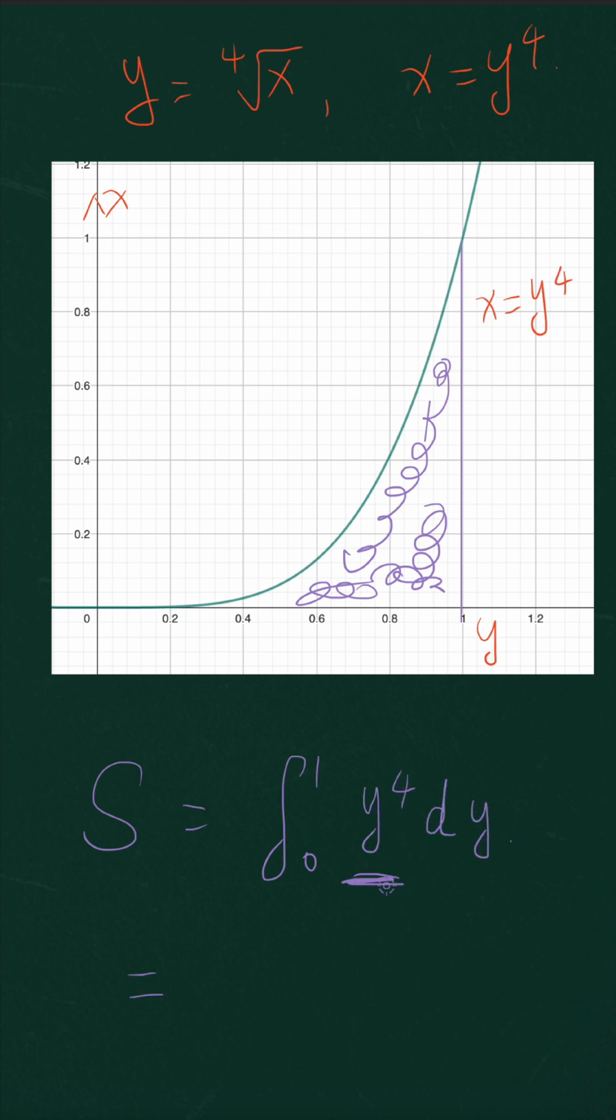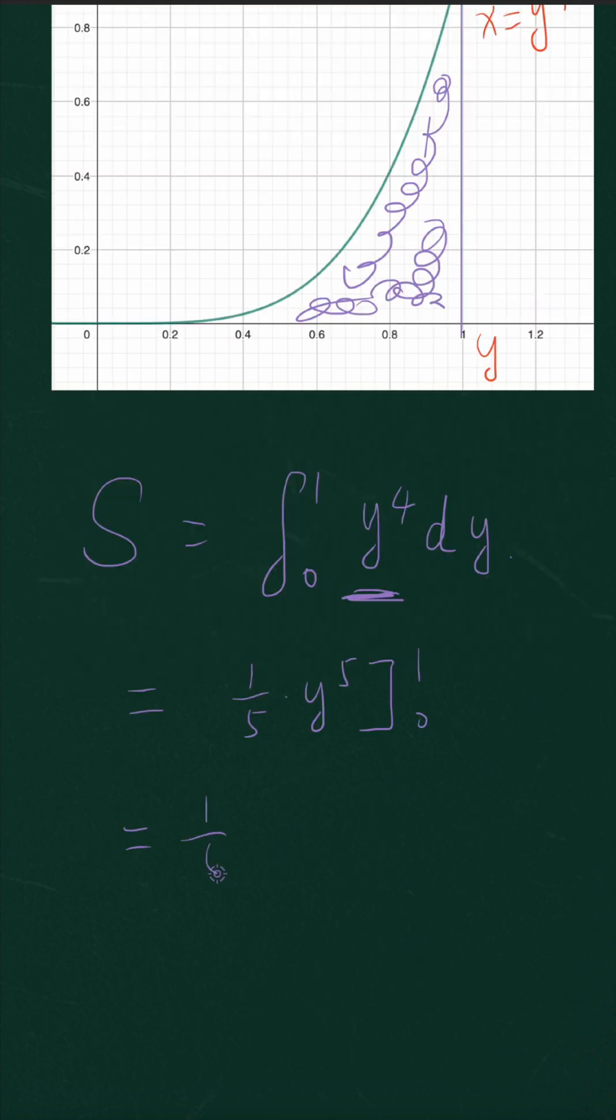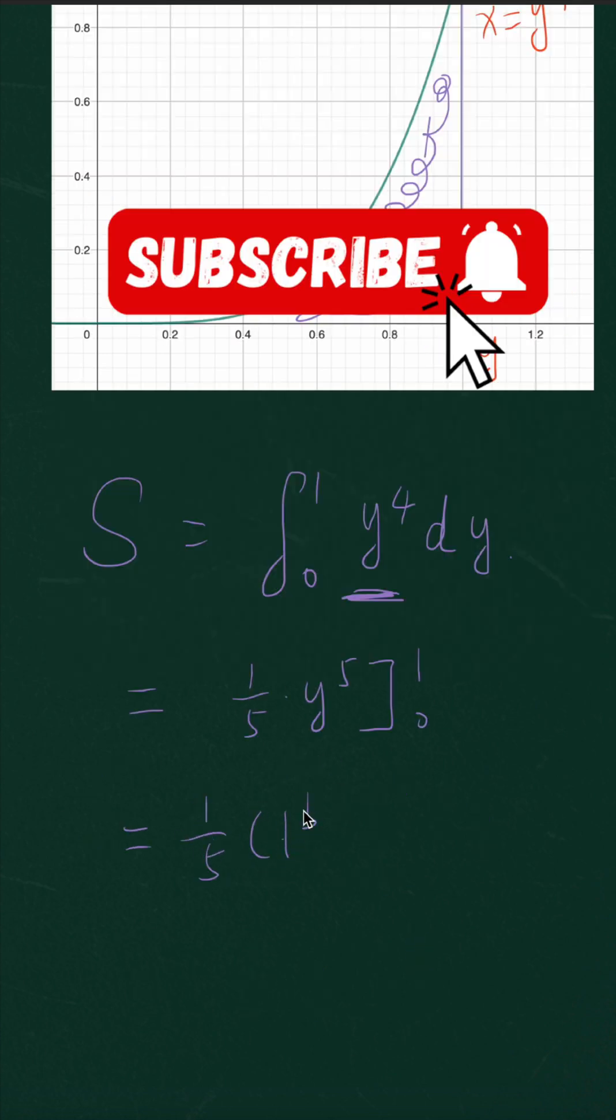So the anti-derivative of y raised to the power of 4 actually is 1 over 5 times y raised to the power of 5. We can notate it as from 0 to 1, which is 1 over 5 times 1 raised to the power of 5 minus 0 raised to the power of 5, which is also 1 over 5.